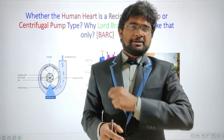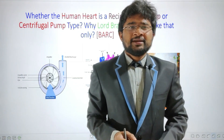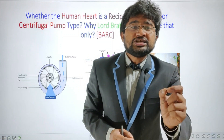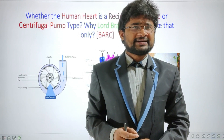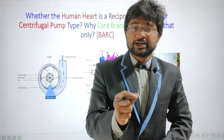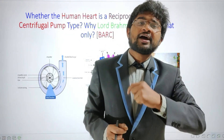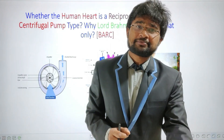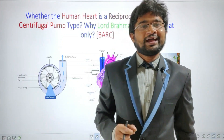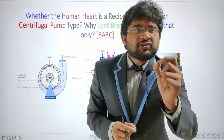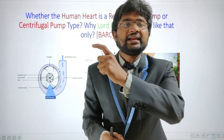Now, why only reciprocating pump type? Why not centrifugal pump? Most people will answer like this: a reciprocating pump is used to deliver fluid to higher heights. But that is not the exact answer to this question, because even a cat has a reciprocating pump type heart. A rat also has the same type of heart. Those animals do not have that much height, yet God gives a reciprocating pump type heart to all animals. So if you face this question in an interview, we need to discuss in detail how to answer it in this session.